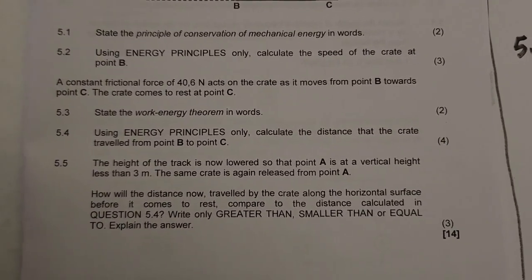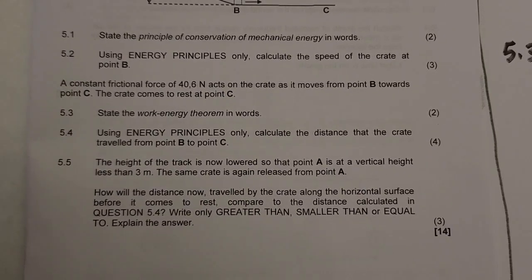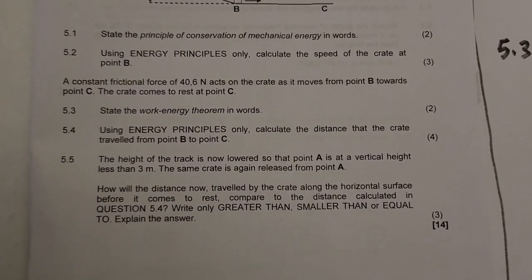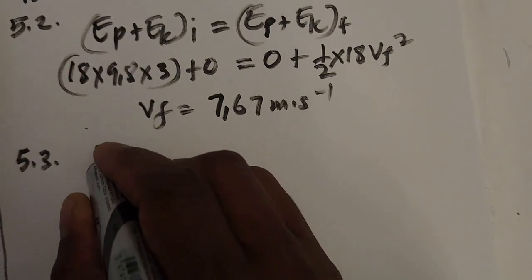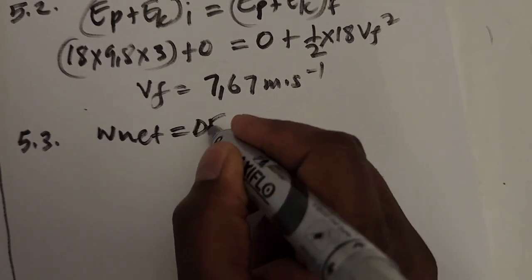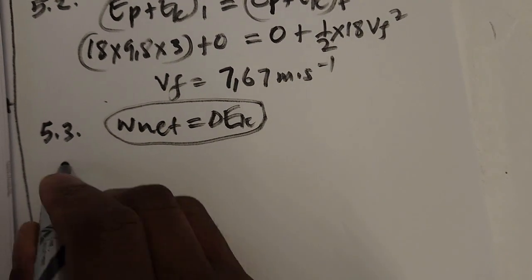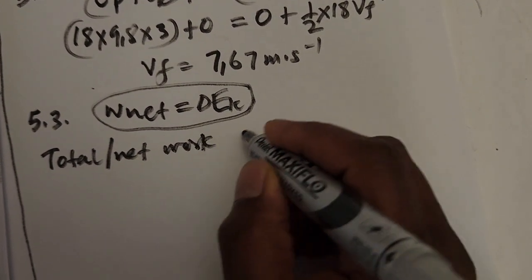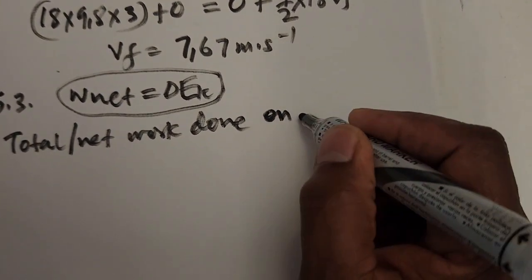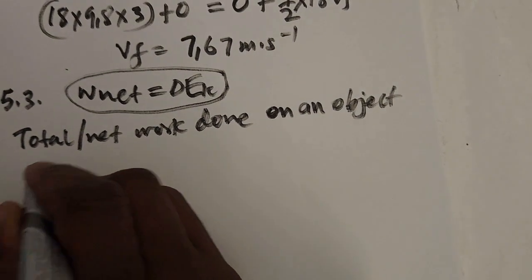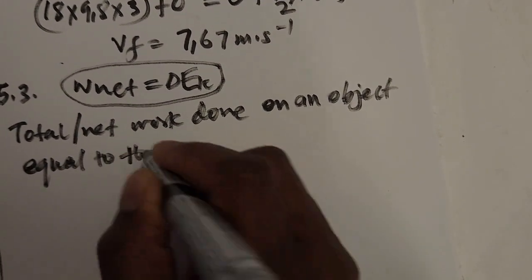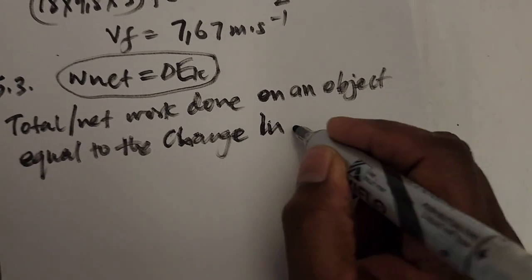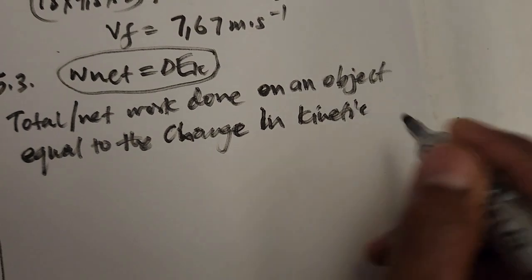A constant frictional force of 40.6 N acts on the crate as it moves from B to C, and the crate comes to rest at C. Question 5.3 asks us to define the work-energy theorem in words. Looking at the formula sheet: the net work done on an object equals the change in kinetic energy of the object.